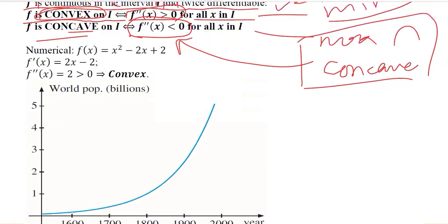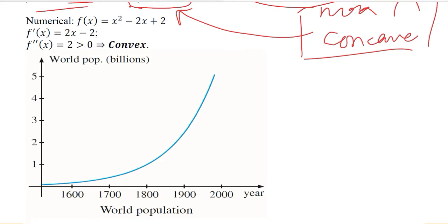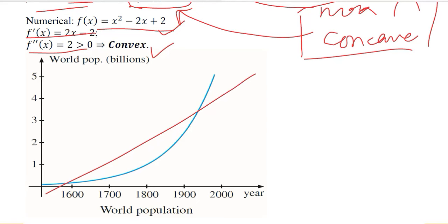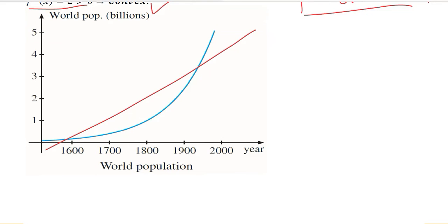Now mathematically we can work through a numerical example. There is a population function which is a quadratic function. We take its first derivative and second derivative, and we get a convex diagram because the second order derivative is positive. In this case it is not just a simple convex diagram — it is an increasing convex diagram, as you can see from the overall increasing trend. This shows population change increasing rapidly.